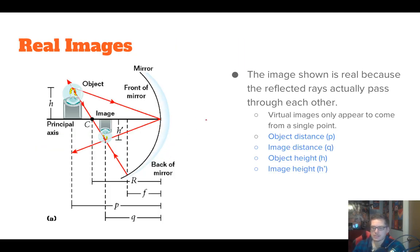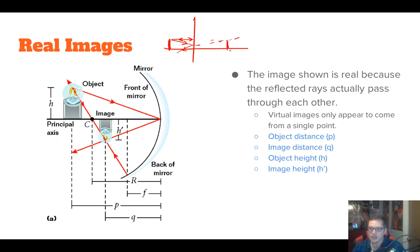Another thing we need to talk about is the difference between real images and virtual images. When we talked about flat mirrors, we said the flat mirror forms a virtual image. If we had an object — like a pencil — over here, rays would form an image on the other side, and we'd draw and predict where that would be. This image was formed by rays that didn't actually exist, so it was called a virtual image.